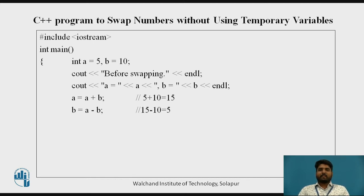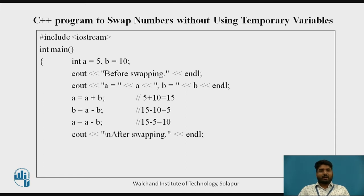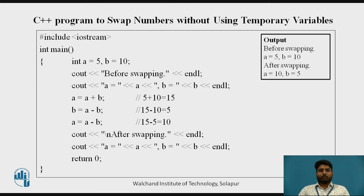b equal to a minus 10: the new value of a is 15 minus the old value 10, so 15 minus 10 gives you 5. Now the latest b value is 5 and the latest a value is 15. In the next equation, a equal to a minus b: the latest a value is 15 and the latest b value is 5, that comes to 10. So if you look at b and a values, you get 5 and 10. After swapping, the new a value is 10 and the new b value is 5. This program is without using temporary variables.